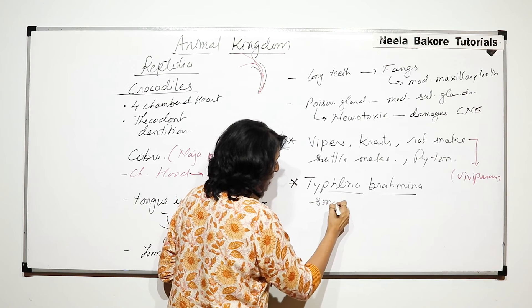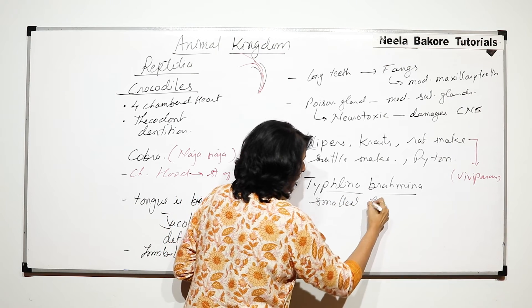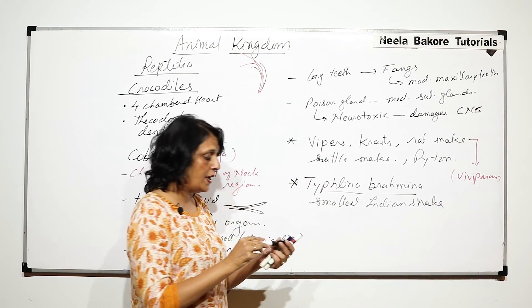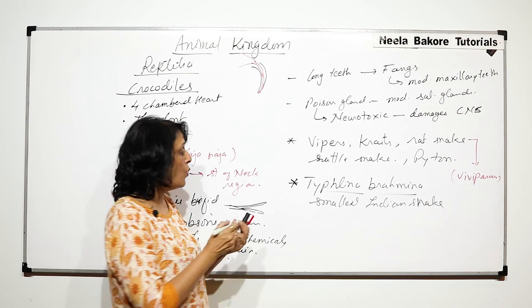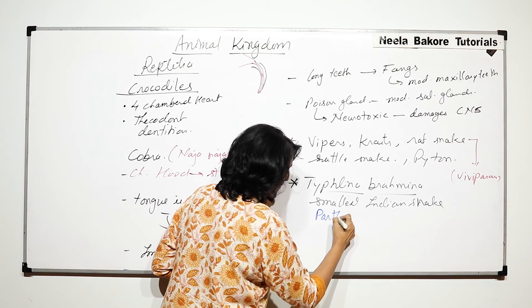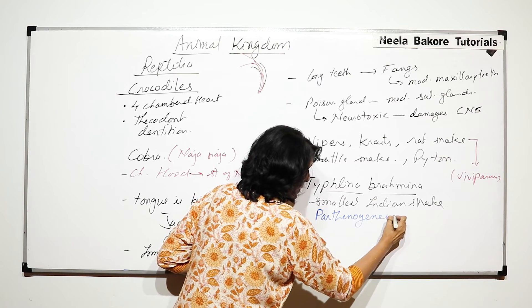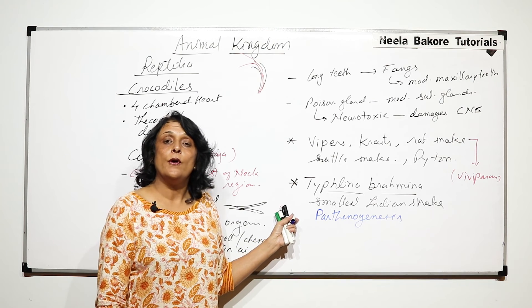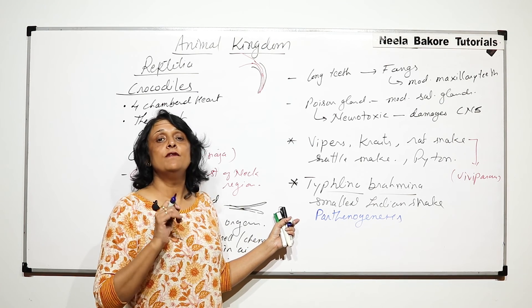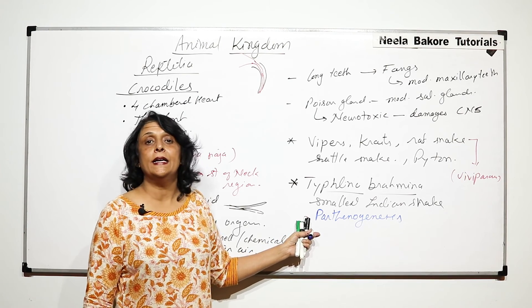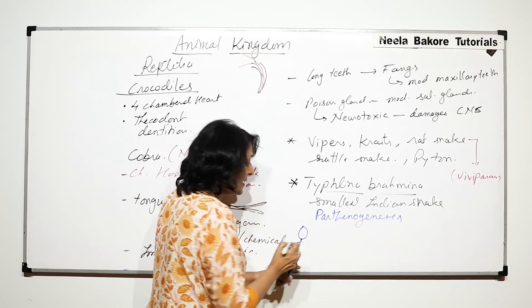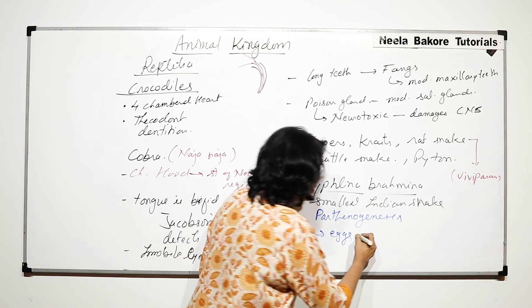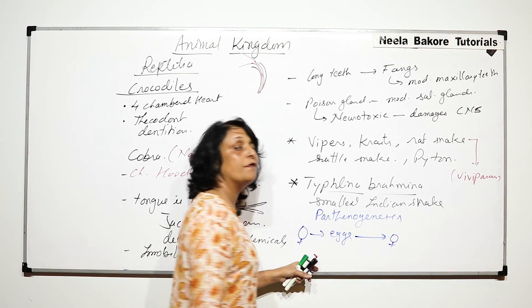It is the smallest Indian snake, and the most important thing about Typhlina is that it shows parthenogenesis. We know parthenogenesis is a method of reproduction in which the organism develops from an unfertilized egg.